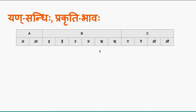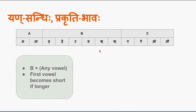En sandhi happens with the combination of group b with any vowel. During en sandhi, if prakriti bhava is preferred, then the first letter — if long — becomes short, and yanaadesha is never applied; we leave it as it is. If prakriti bhava is not preferred, en sandhi is applied. Example: 'dadhi + atra'.